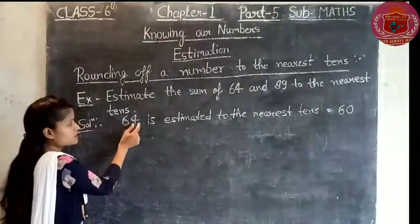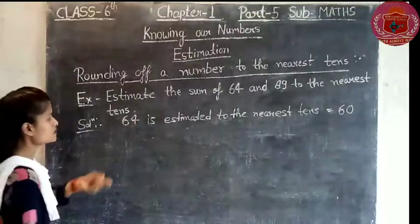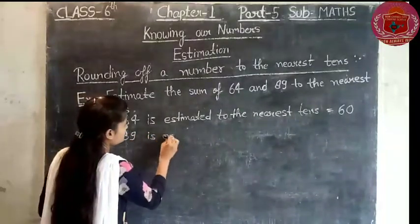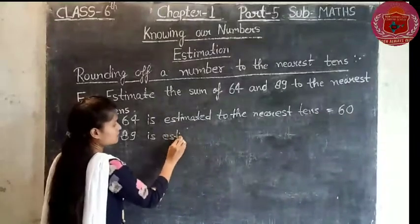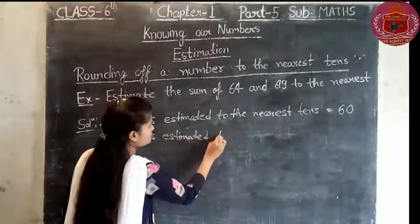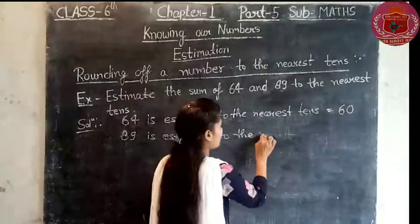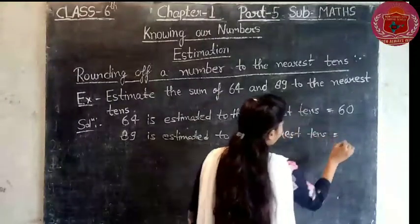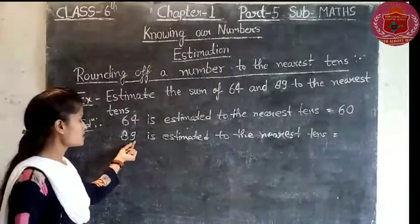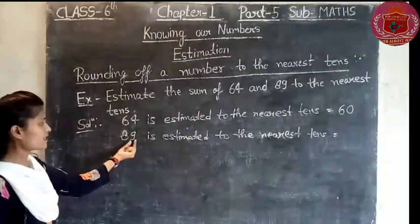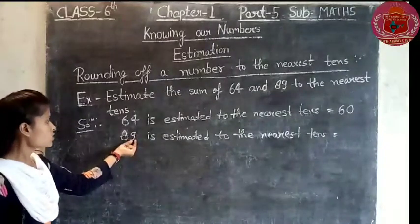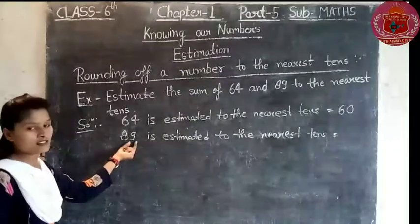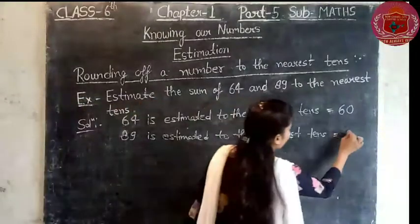Next, 89 is estimated to the nearest ten. The ones place digit is 9, which is 5 or more than 5. So we increase the tens digit by 1 and replace the ones digit by 0. So 89 is estimated to the nearest ten as 90.